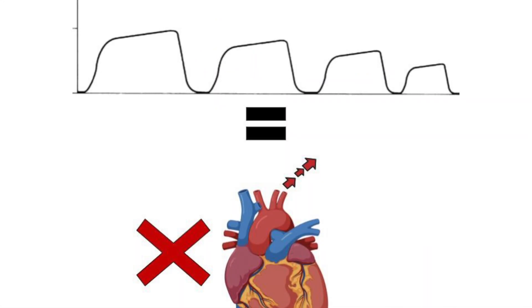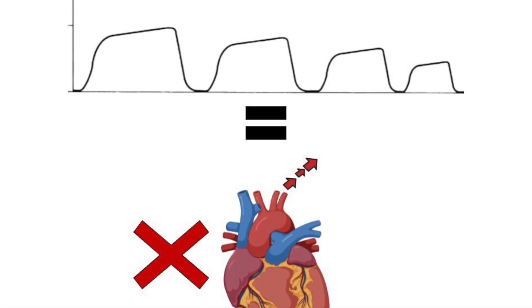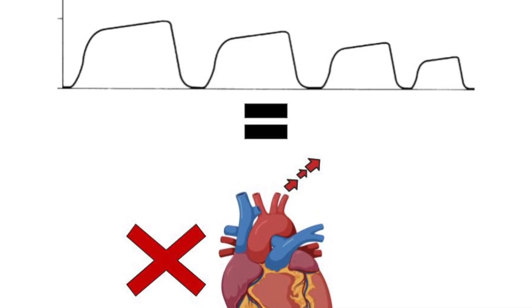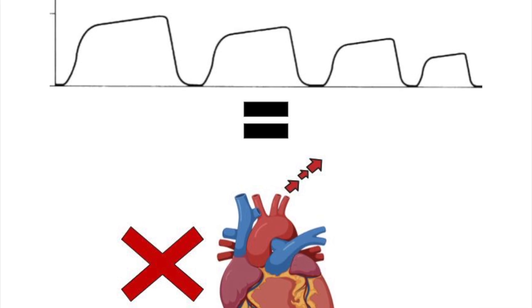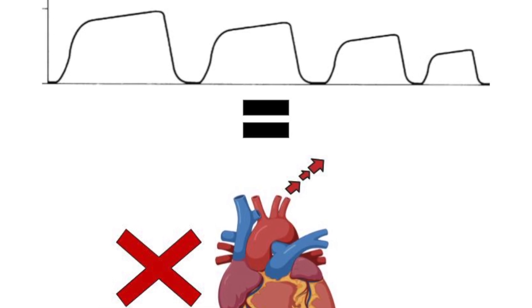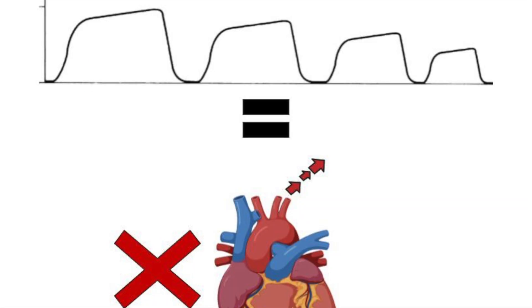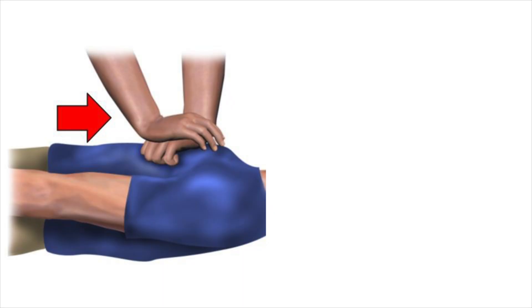If we see dropping end-tidal CO2 while we're providing compressions, what that tells us is the cardiac output being generated by those compressions is inadequate. We're going to have to change something to make those compressions better. Possibly we have shifted and we're not compressing the heart properly, so this can be a check on the position of where we're providing compressions. It may also simply be that the compressions themselves have changed in quality. They're not quite as robust as they were, meaning that the person providing those compressions might have tired out, and now it's time to switch that compressor out.